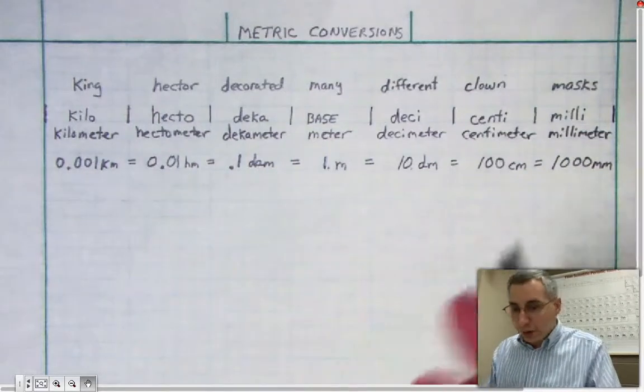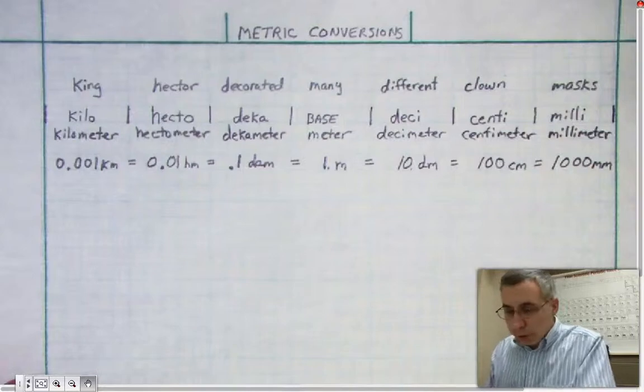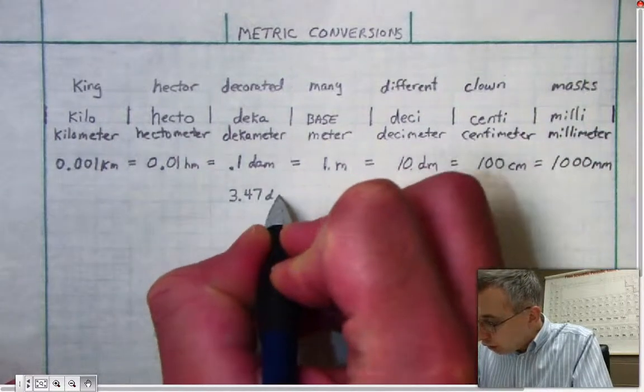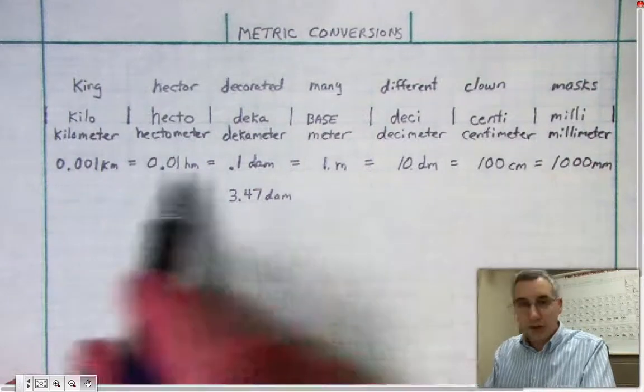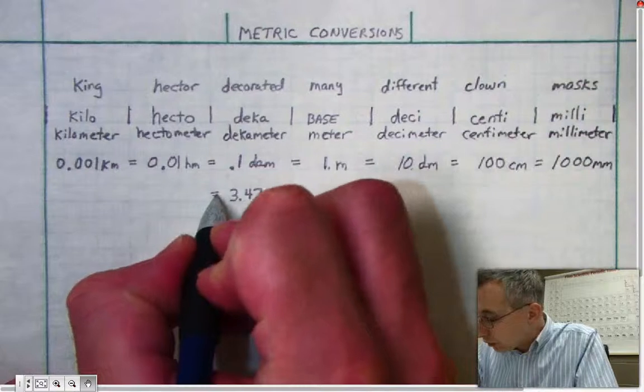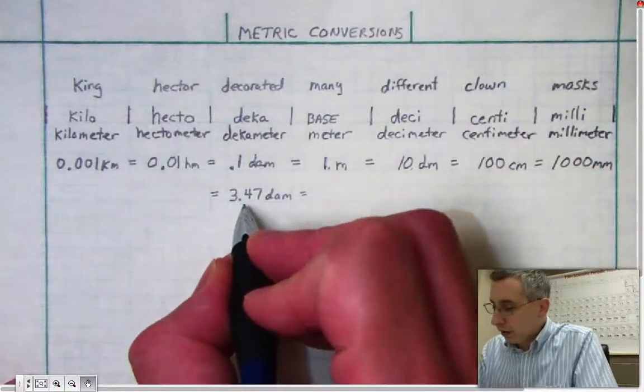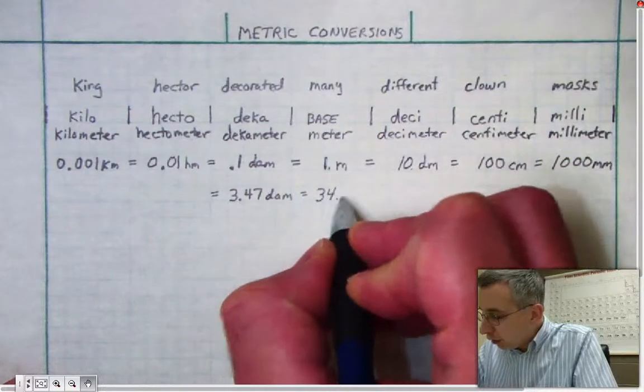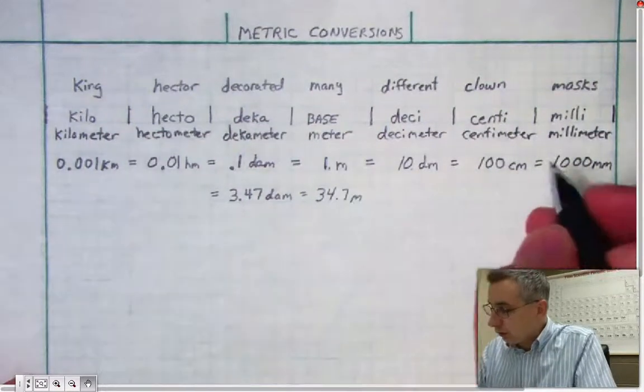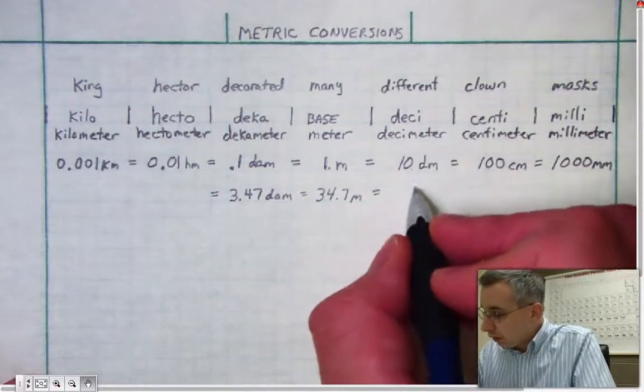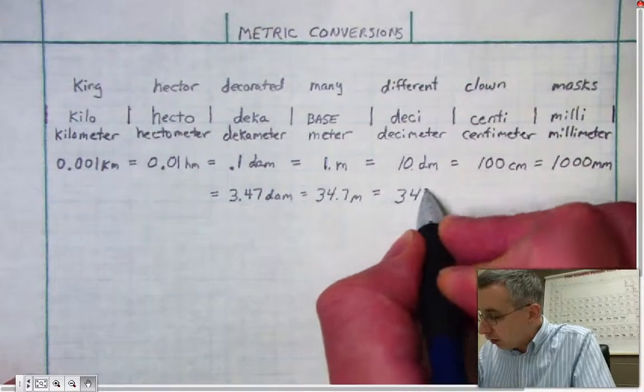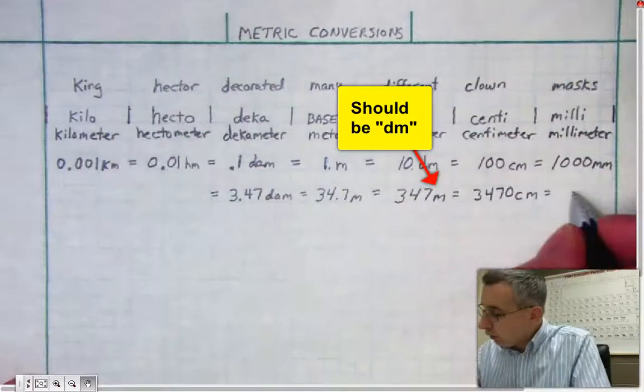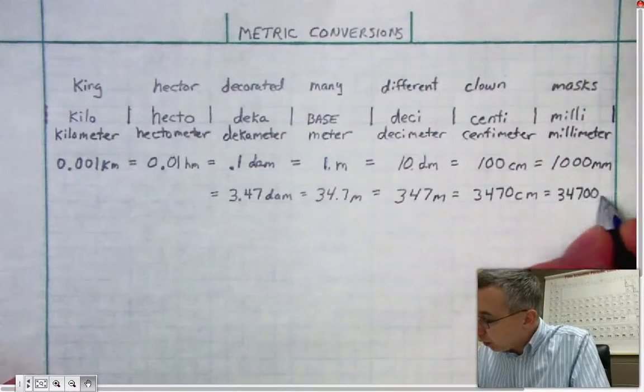Now you can use the same idea of moving the decimal place for numbers that are not as obvious. For example, someone might say I have 3.47 decameters. They might ask you to convert it into any one of these other units. Well, you just need to move your decimal place. Here I can move from decameter to meter, move my decimal place once. Instead of 3.47, it becomes 34.7 meters. Keep going. Turn it into decimeters. Again, move your decimal place once as you move one column. It becomes 347 decimeters. For centimeters it becomes 3470 centimeters. For millimeters, then 34700 millimeters.